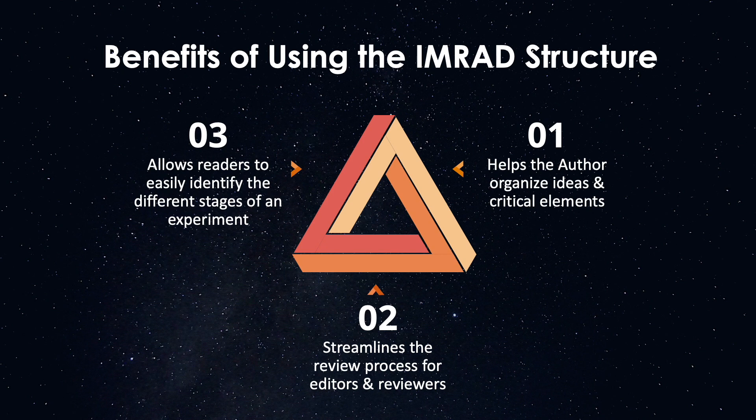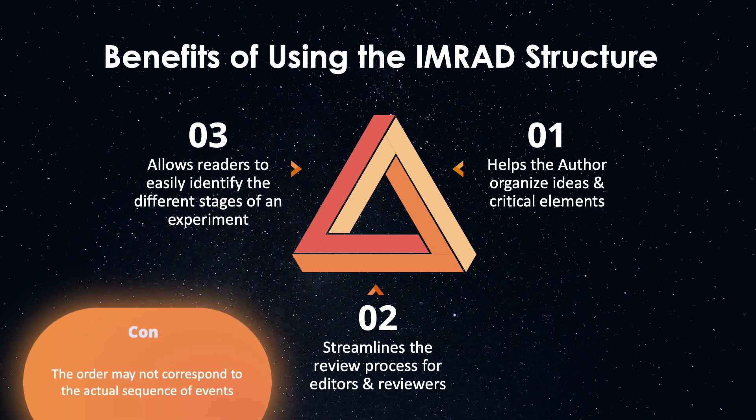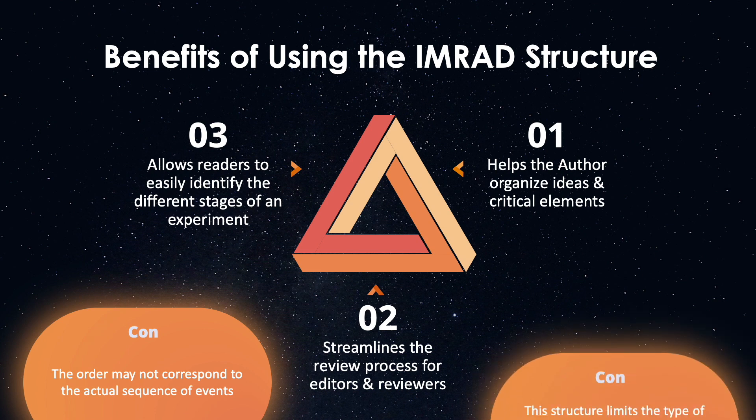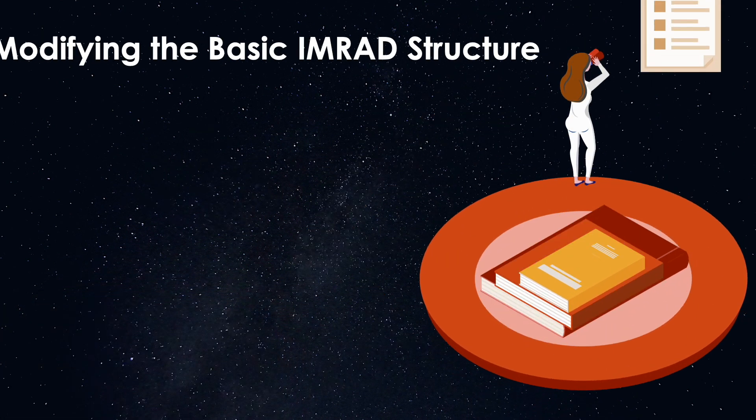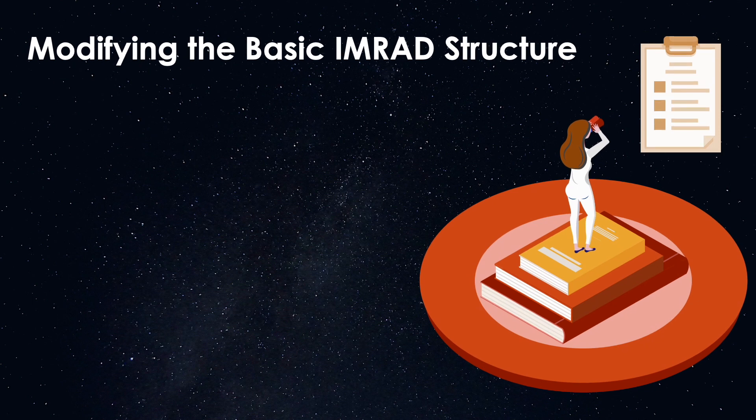Unfortunately, this same modular structure often does not correspond to the order in which the experimental procedure was carried out. Furthermore, the IMRAD structure limits the type of information that can be included in a scientific paper. It is because of these limitations that many journals have modified the basic IMRAD structure, so that many papers today have two to eight additional sections.